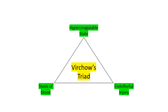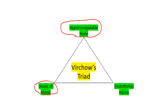Any talk on thrombosis is incomplete without Virchow's triad, which gives us three factors predisposing to thrombosis. Number one is hypercoagulable state — our focus in this video. Number two is stasis of blood; for example, stasis in the left atrial appendage in atrial fibrillation predisposes to thrombosis. Number three is endothelial injury, which exposes pro-thrombotic material to blood, resulting in clot formation.